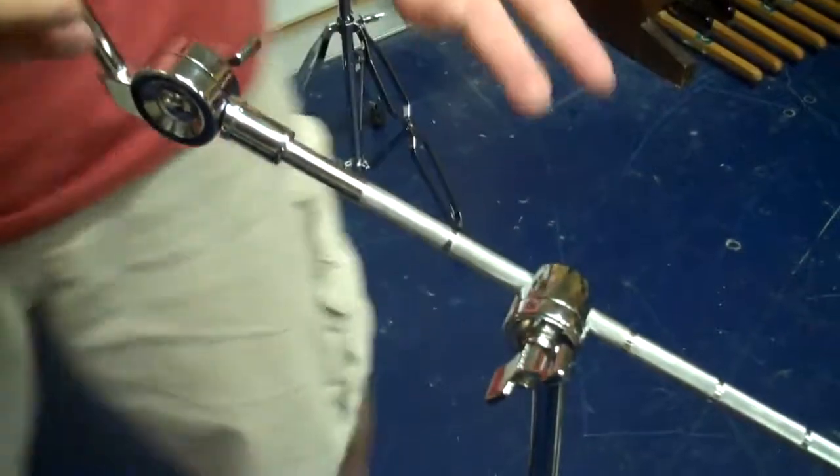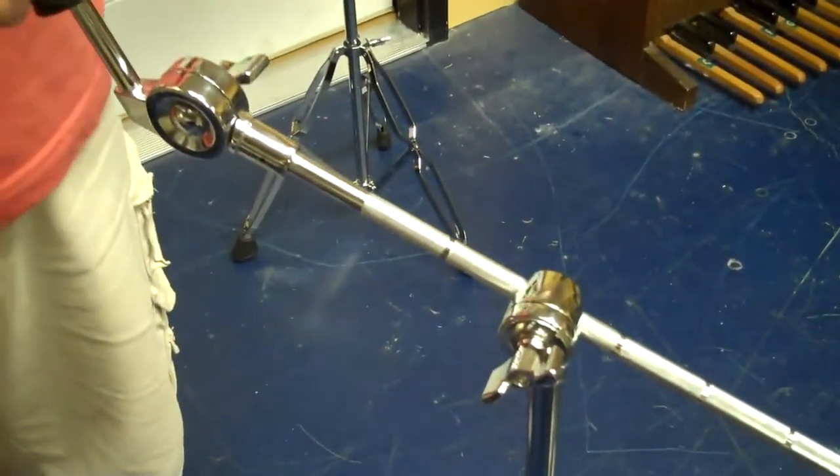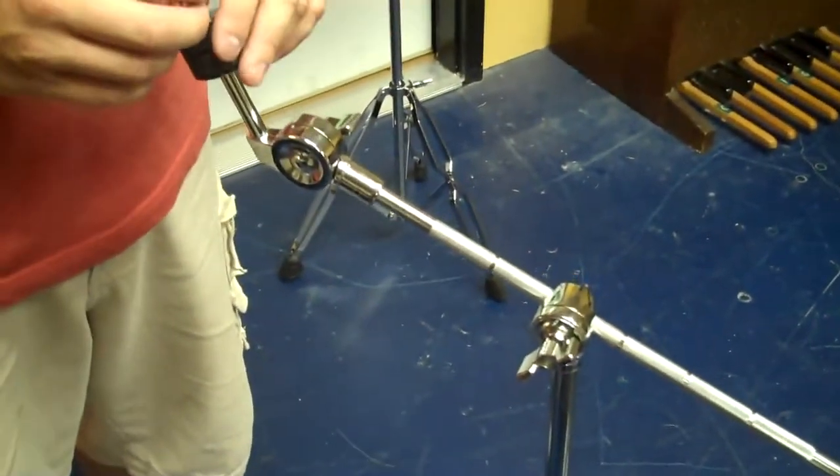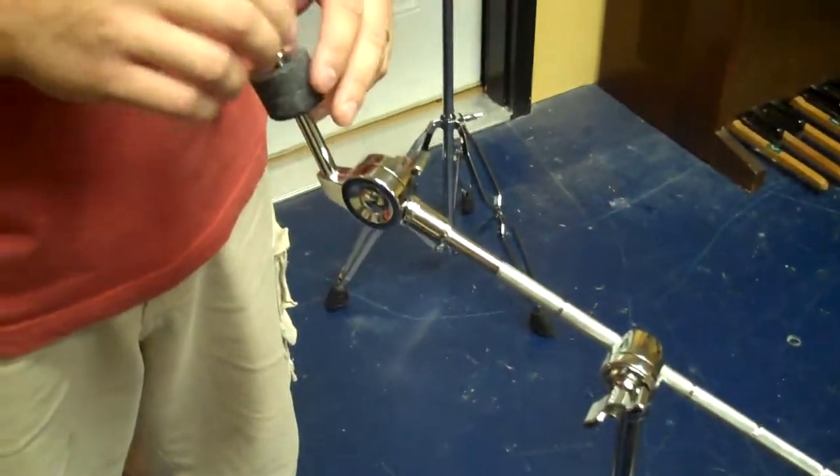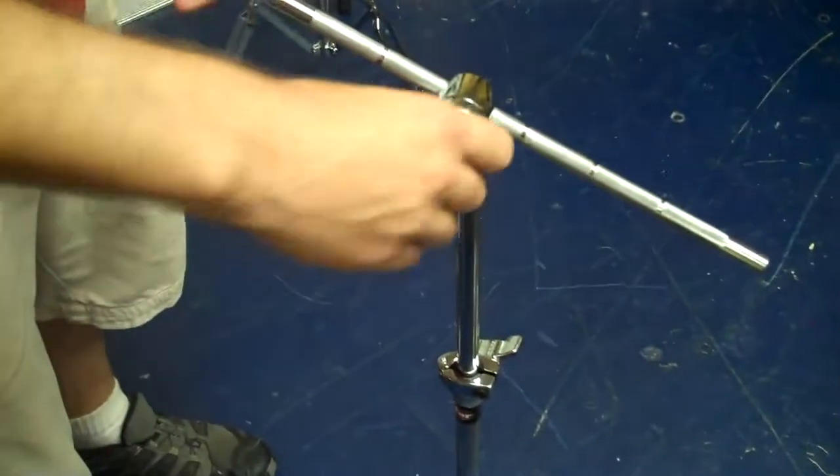So I'd recommend using this for the crash because sometimes you want the crash to kind of hang on top of the small tom and reaching into your drum set setup a little closer to where you're playing. Everything else is exactly the same. Make sure you loosen things before you move it.